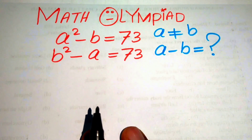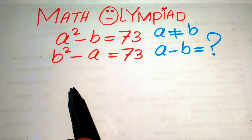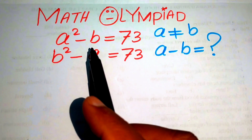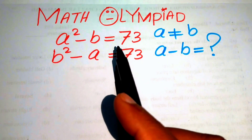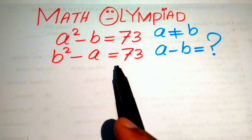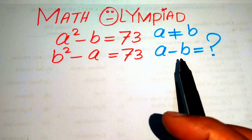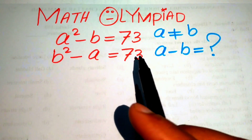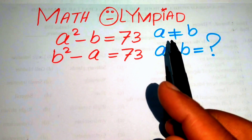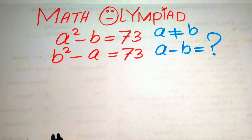Hello everyone, welcome back to the Map of Mathematics. In this video we are going to solve this nice math olympiad algebra problem. We have a squared minus b equals 73, and b squared minus a equals 73, and we need to find the value of a minus b. Remember that a and b are distinct numbers, so they are not equal.